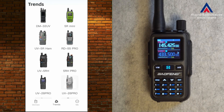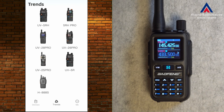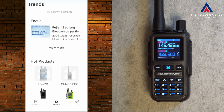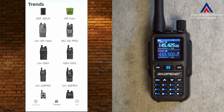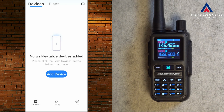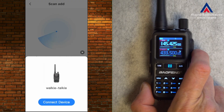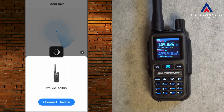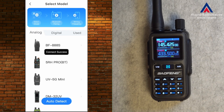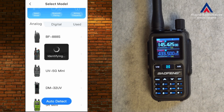On the start page of the app you can find hot products — all Baofengs here, all handheld transceivers. To add a new device, click on Devices, then Add Device. It scans for devices nearby and here is the walkie-talkie. Let's connect.